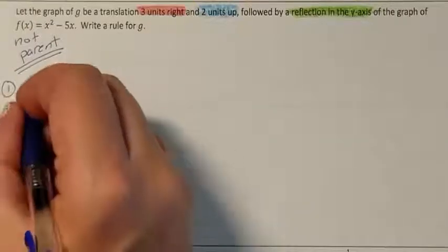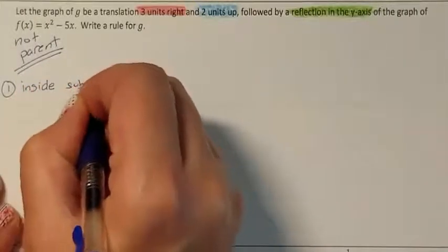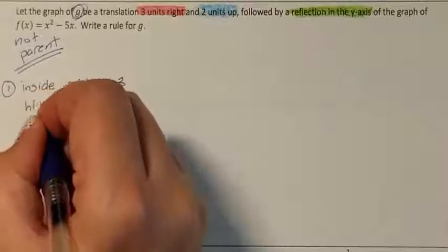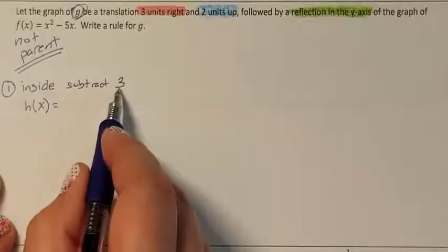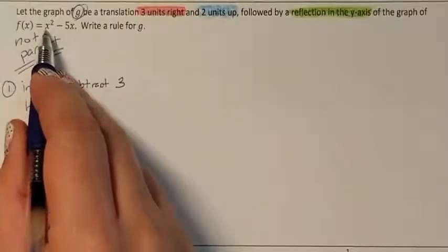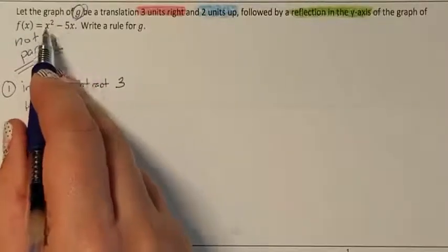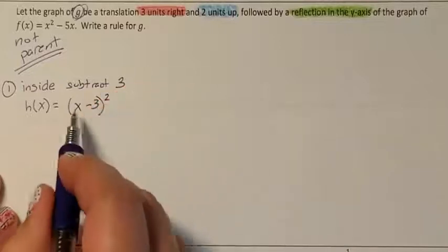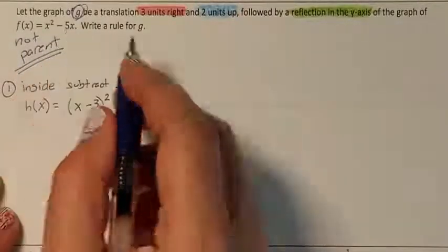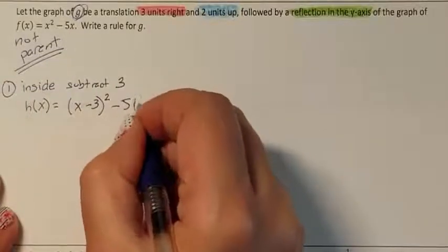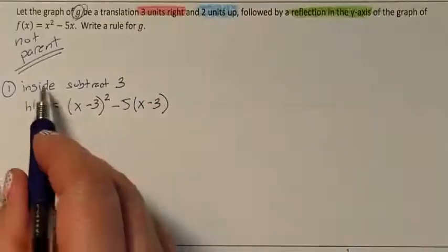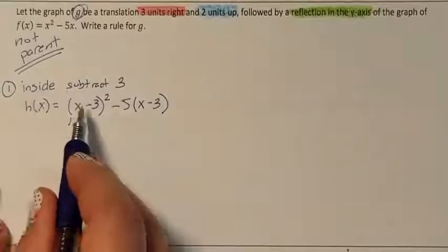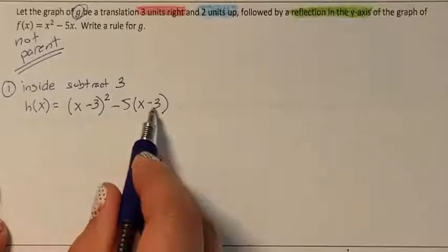He is not my last step, so I'll call him h. On the inside where x's are, I subtract 3 from each x. I notice there are x's in two different spots, so each x gets a minus 3. The exponent goes on the outside, making this an inside minus 3. The other x also gets an inside minus 3. So here is my new problem after step 1.